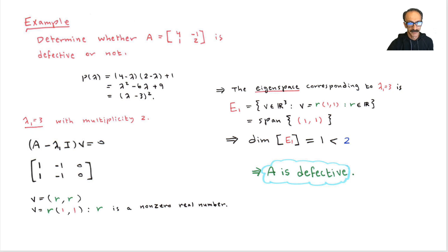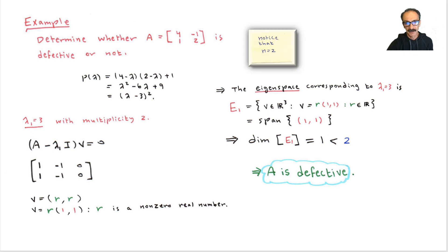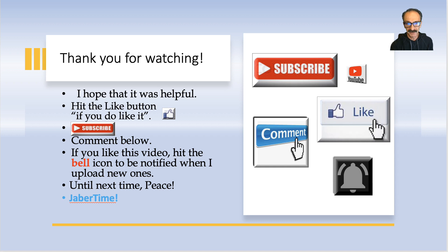To summarize: make sure you know how to determine if a matrix is defective or not. We had two clear examples, but this section was focused on the eigenspace. For the second example, we had only one vector total, which determines that A is defective. Thanks for watching — hit the like button, subscribe, comment below, and hit the bell icon to be notified of new uploads. Planning to upload sections 7.3 and 7.4 within a week.